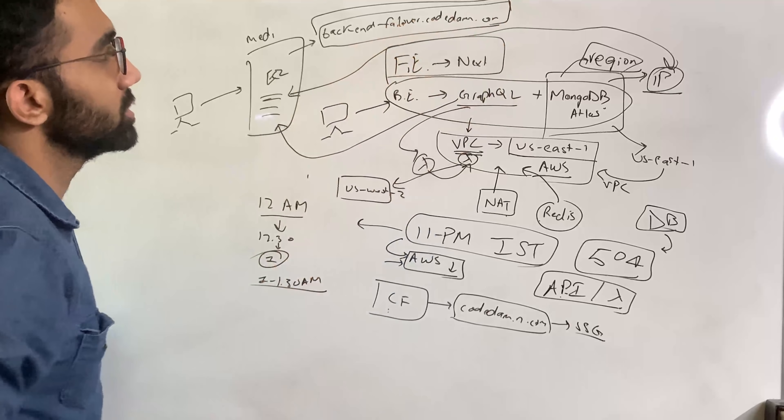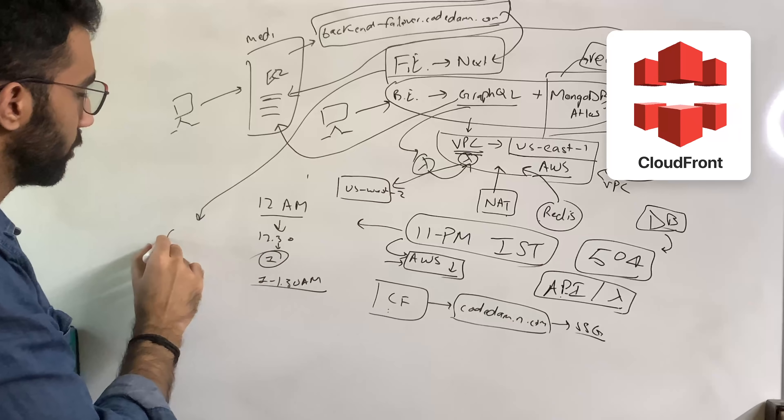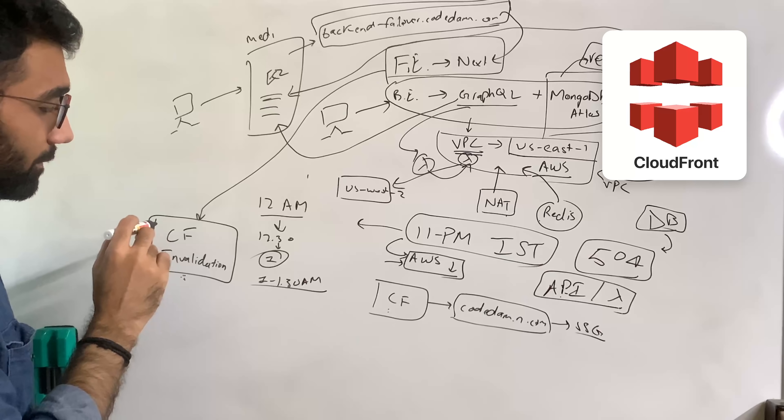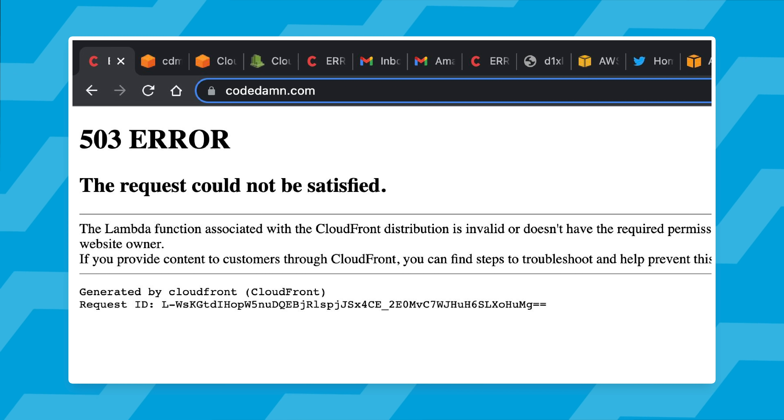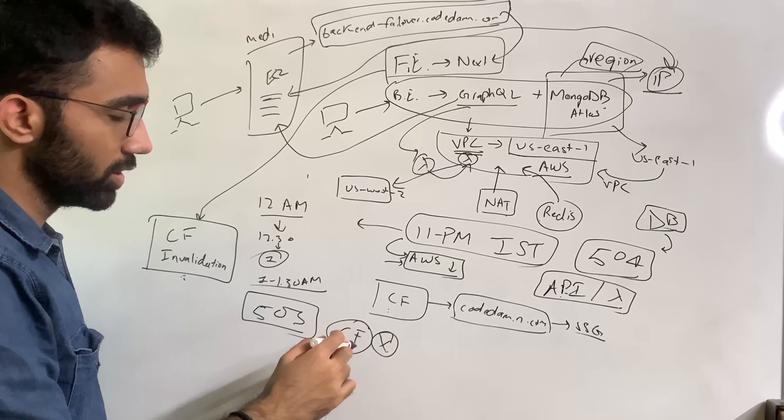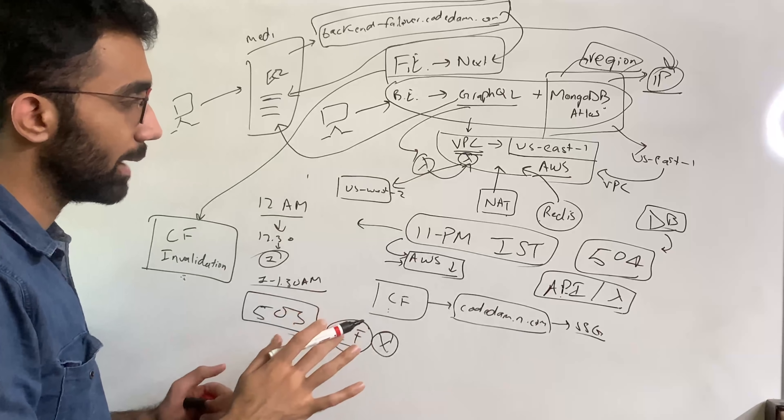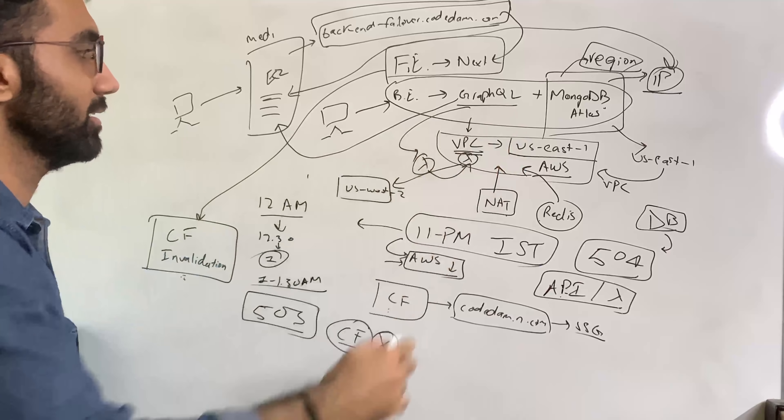Here's what happens now. In order to deploy this new change, backend-failover.codedam.com, I obviously pushed this to the Next.js repo. Next.js repo did a CloudFront invalidation of the production deployment and the hell broke down. The moment we did this CloudFront invalidation, all the pages on the website went 503, unable to communicate to the backend.